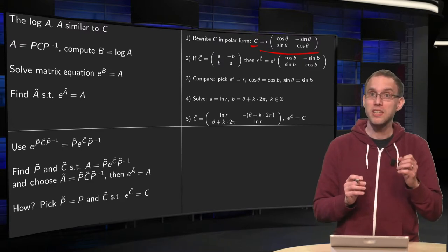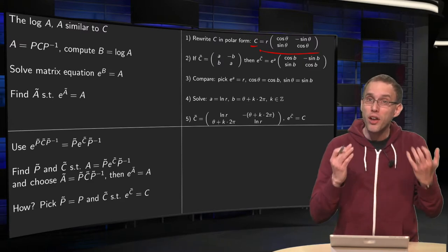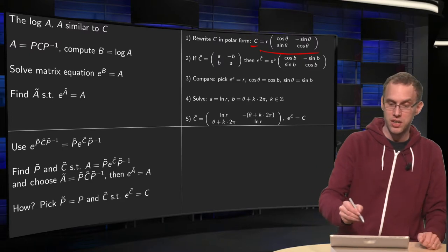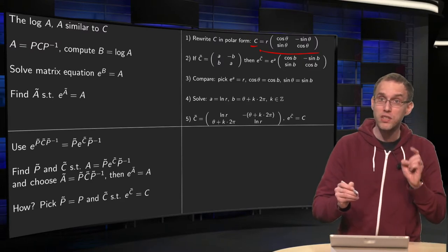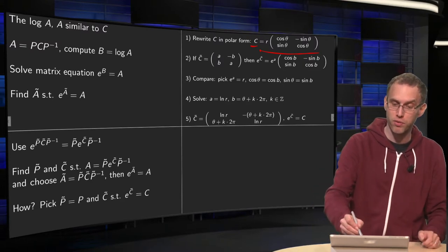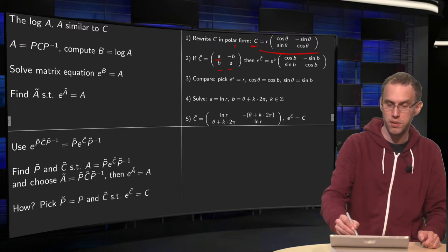And then you notice that your C̃ will be some other scaling rotation matrix, so you do not write this one in polar form, you write this one in normal form with an A, A, B, and minus B like this.